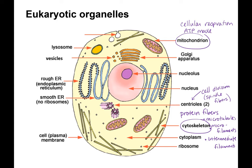The nucleolus, which we'll talk about in chapters 16 and 19, is the site of ribosomal subunit assembly. Not the whole ribosomes, but the large and small subunits are made here and then leave the nucleus. On the rough ER or in the cytoplasm, they actually come together. Ribosomes are these little protein-RNA complexes, often drawn like a snowman, and they are the site of protein synthesis or translation.